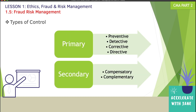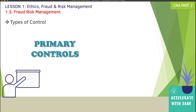There are two main categories: primary controls and secondary controls. Under primary controls, we have four types: preventive, detective, corrective, and directive. Under secondary, we have two: compensatory and complementary. Primary controls are designed and implemented with the main objective to prevent, detect, correct, and direct certain fraudulent activities — the controls are specifically designed for this purpose.